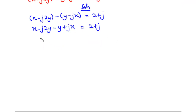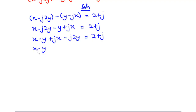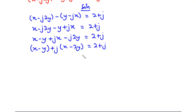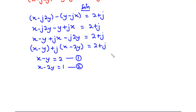Grouping like terms: (x minus y) plus j(x minus 2y) equals 2 + j. We can now generate two linear equations. For the real part: x minus y equals 2 — call this equation 1. For the imaginary part, since the coefficient of j is 1: x minus 2y equals 1 — equation 2.